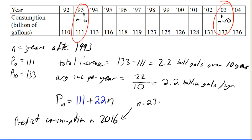And so that we can go ahead and calculate P23 is 111 plus 2.2 times 23. And we can calculate that out to be 161.6 billion gallons. And so our model predicts that the consumption will be 161.6 billion gallons in 2016 if this trend continues.